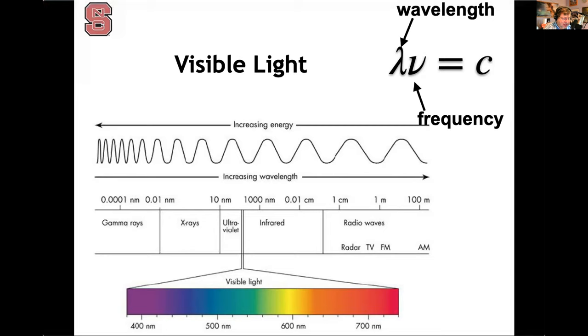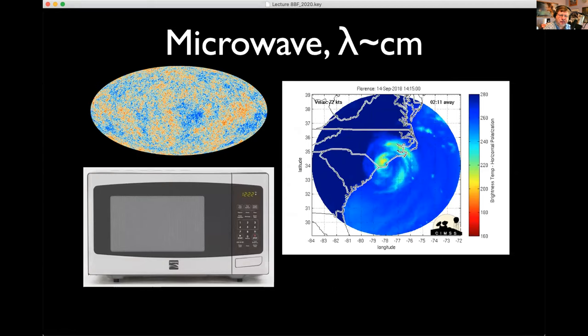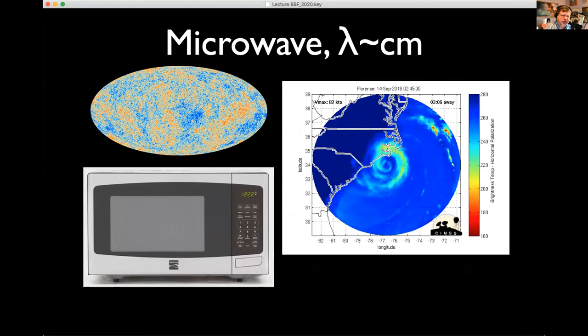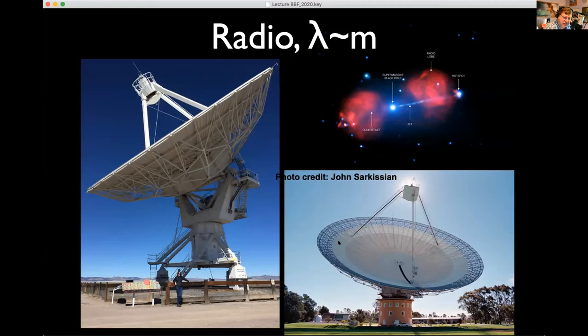Blue light has the shortest wavelength, highest frequency, and highest energy in the visible spectrum. Red light has the longest wavelength, lowest frequency, and lowest energy. This is counterintuitive because we often assume blue represents cold and red represents hot — but in fact blue represents higher energy and red represents lower energy. We'll talk about that in the next lecture. Microwaves have wavelengths of about centimeters.